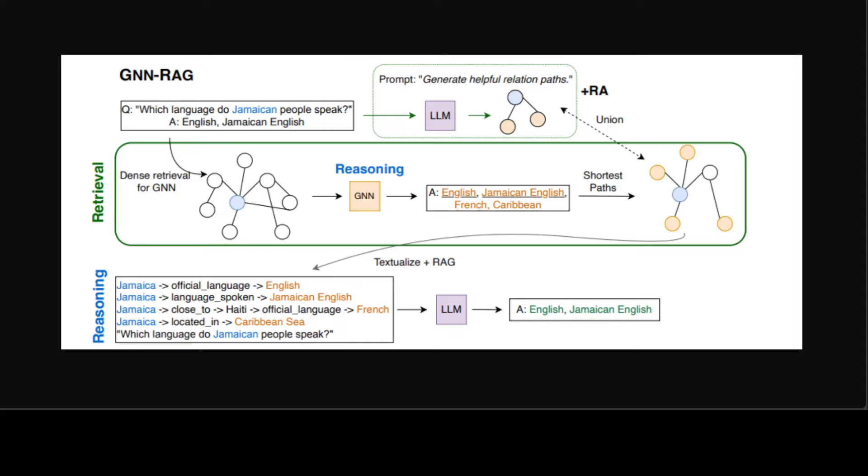This KGQA method falls into two categories. One is a semantic parsing method and the other one is information retrieval method. Semantic parsing methods learn to transform the given question into a query of logical forms such as SPARQL query. The transformed query is then executed over the knowledge graph to obtain the answer. But SP methods require ground truth logical queries for training and that is time consuming to annotate in practice and sometimes it leads to non-executable queries.